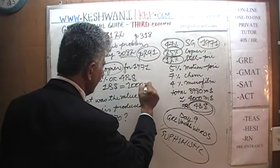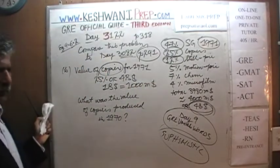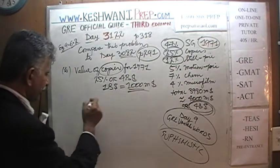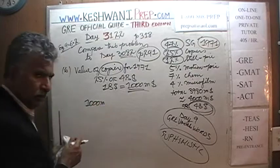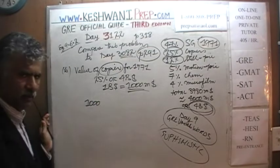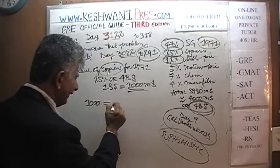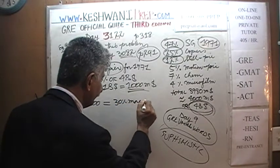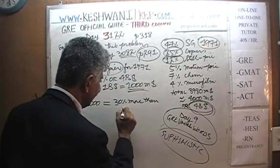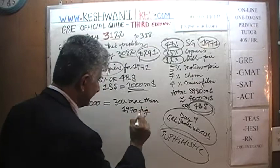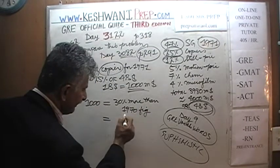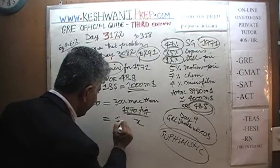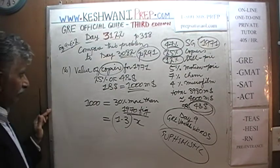That 1,000 million dollars represents a 30% increase over 1970 figures. So let's call the 1970 figure X. If you take 30% more than X, that is 1.3 times X, and that equals 1,000 million. So we divide both sides by 1.3, giving us X equals 1,000 divided by 1.3.